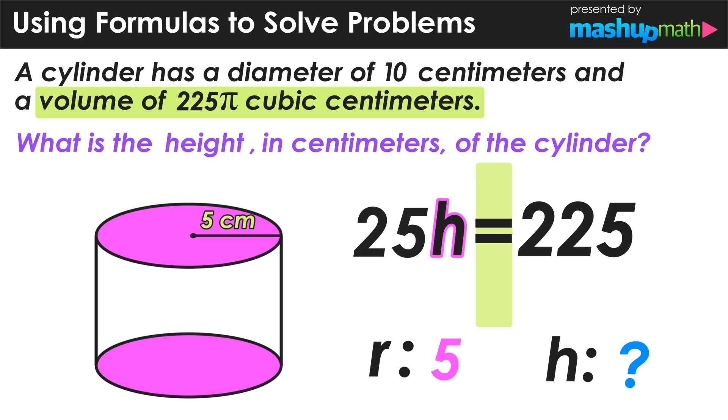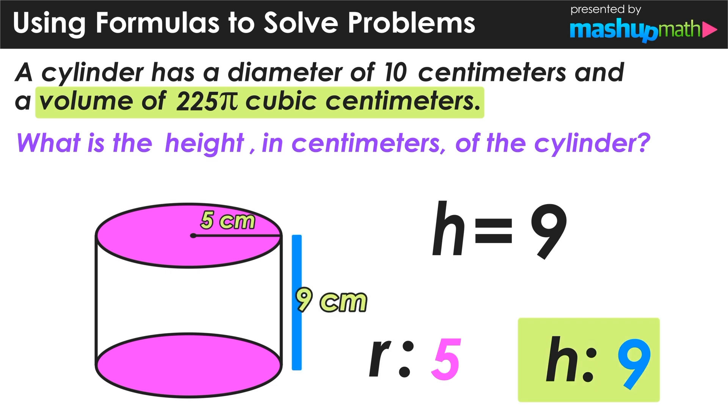We can do that by performing inverse operations. The opposite of multiplying by 25 is to divide by 25 on both sides of the equal sign. That will cancel it out on the left side of the equal sign. On the right side, 225 divided by 25 is equal to 9, and we can conclude that the height of this cylinder is equal to 9 centimeters.